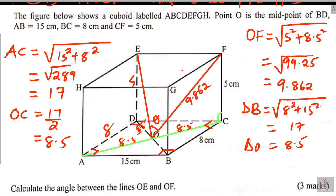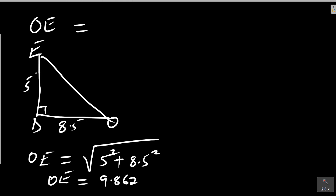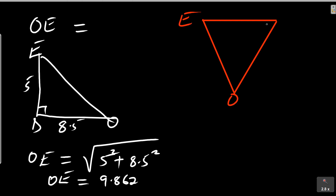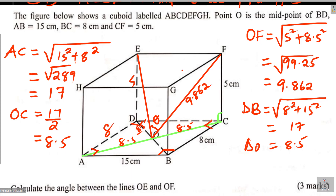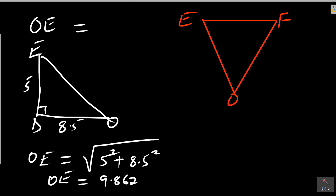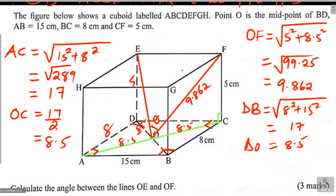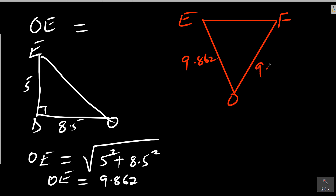Now we can extract triangle EOF. Drawing it here: O, E, and F. OE is 9.862 and OF is also 9.862. The angle required is the whole angle at the centre between OE and OF.